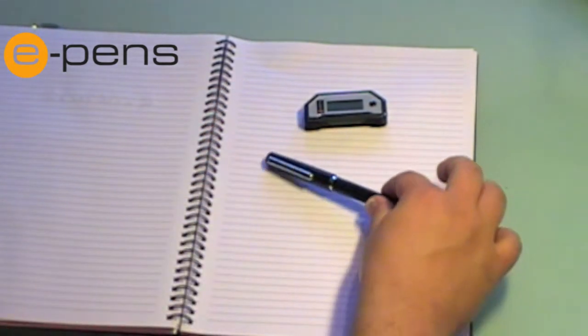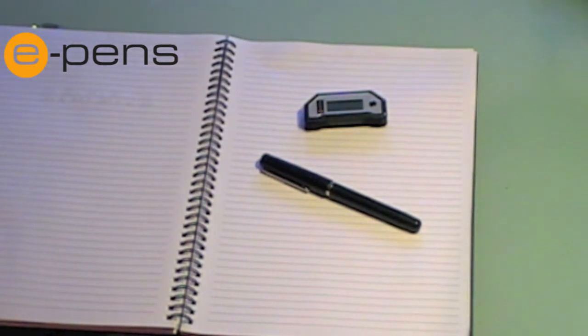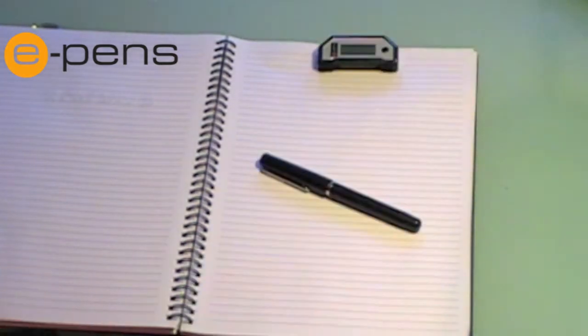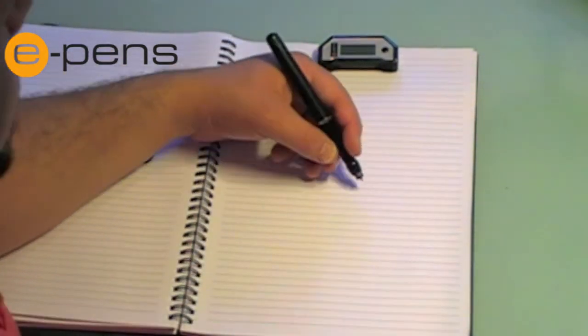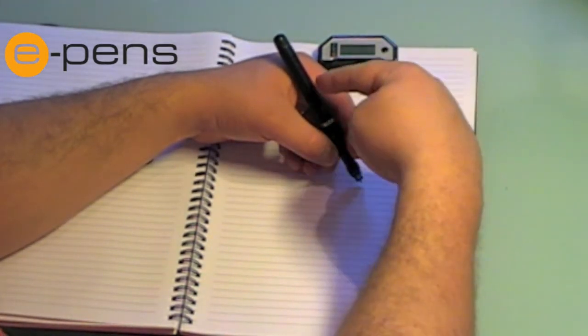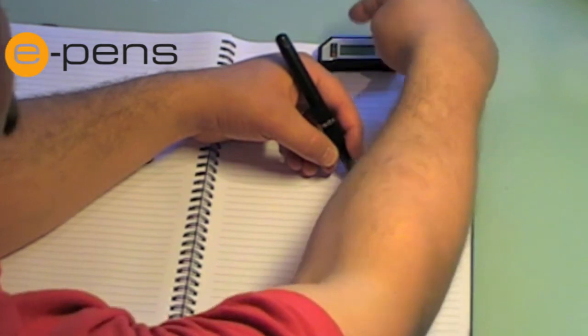Next you need to attach the base unit to the paper. If you're right-handed, we suggest you do this in the top centre of the page. If you're left-handed, make sure that when you're holding the pen your hand doesn't block the signal being sent from the pen to the base unit.